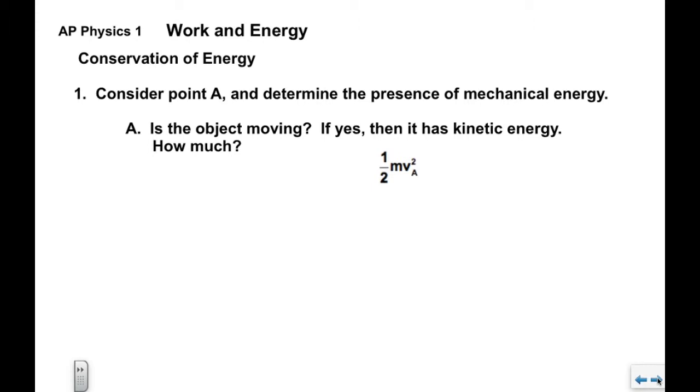Now, problem solving strategy. The first thing we're going to do is look at point A and we're going to ask a number of questions about the presence of different forms of mechanical energy. First, we're going to ask if the object is moving. If it is moving then we would say it has kinetic energy, we know that already. The how much of course is one half mv squared.